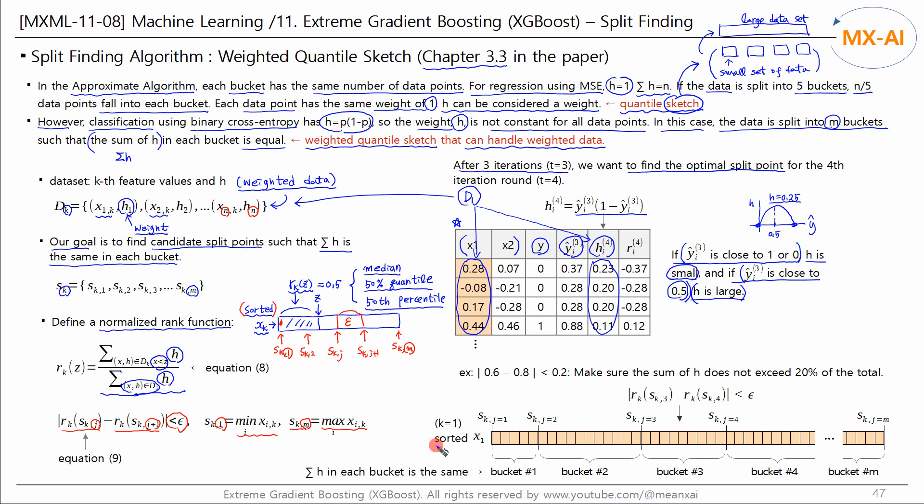When the x1 sorted in ascending order are like this, sk are as follows. Split the data points into a total of m buckets. Again, the sum of h in each bucket is the same. And the process of finding the best split point is the same as the approximate algorithm seen in the previous video.